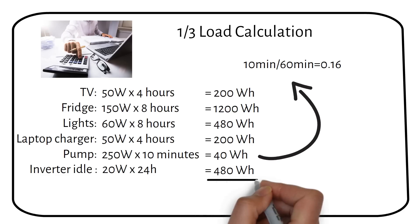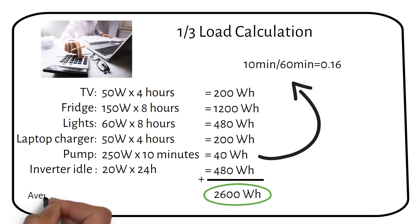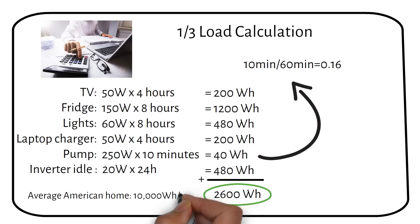We get a total of 2600 watt hours. For comparison, the average American household uses 10 kilowatt hours per day. We have finished the hardest part. Let's now determine how many batteries are needed to support these loads.